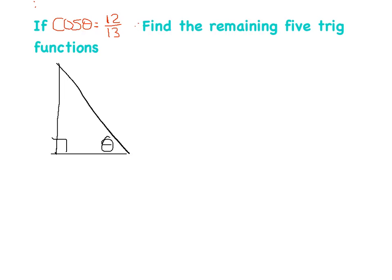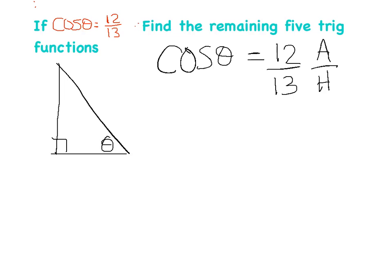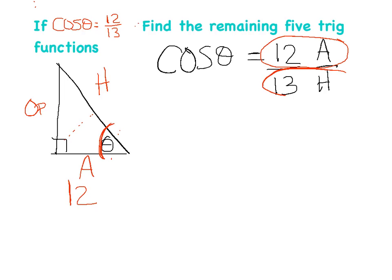From SOH-CAH-TOA, cosine = adjacent/hypotenuse. So from cosine = 12/13, the adjacent side is 12 and the hypotenuse is 13. Label hypotenuse, adjacent, and opposite on the triangle accordingly.